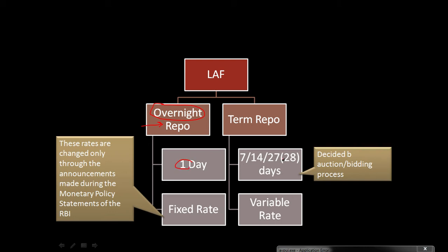The overnight window is basically for one day, and the term window covers 7, 14, 27, or 28 days. Under the LAF facility, banks borrow from the RBI or park their money with the RBI, and some interest rate is involved depending on the type of facility being used. In the overnight market, the interest rate is decided by the policy rate announced by the MPC, whereas in the term window the interest rate is decided by an auction mechanism.